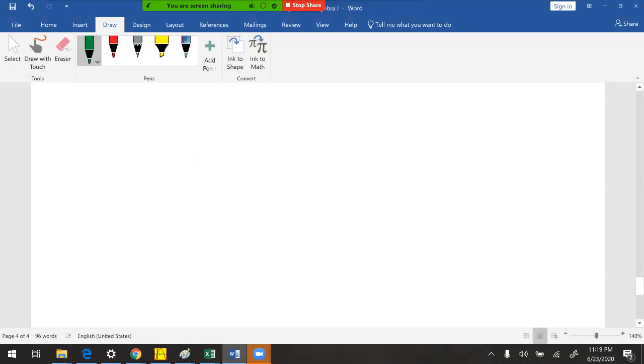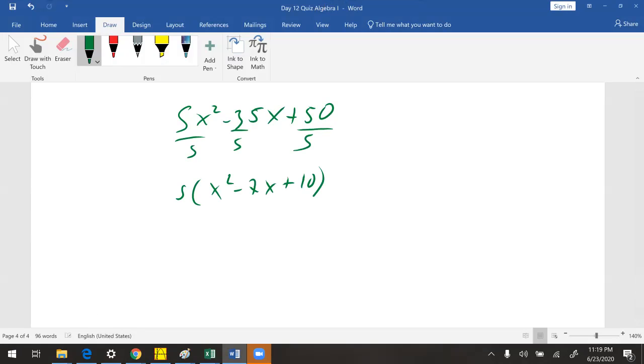So now let's do this on a separate sheet of paper. 5x squared. Let's go back to this minus 35x plus 50. So minus 35x and then plus 50. I can divide these all by 5. I can't take anything else or take out anything else. So I'm left with x squared minus 7x plus 10.